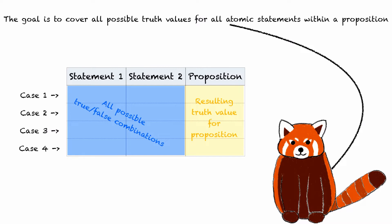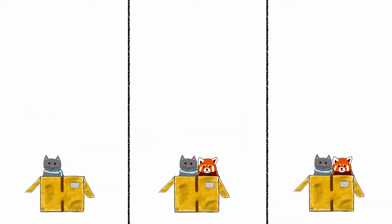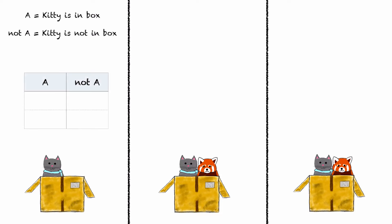Let's look at some basic propositions with the help of Rex and Kitty. Suppose statement A is 'Kitty is in a box.' The negation of this statement is not A: 'Kitty is not in the box.' The truth table for negation consists of the atomic statement A and the proposition not A. As we see in the picture, Kitty is in the box, so A is true. Naturally, if Kitty is in the box, the statement that Kitty is not in the box must be false. Now, if Kitty leaves the box, the statement 'Kitty is not in the box' becomes true and the statement that Kitty is in the box must be false.